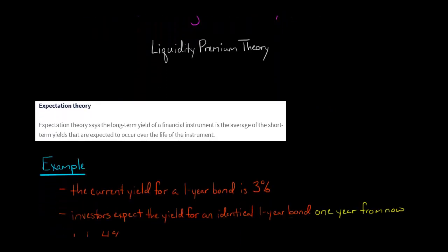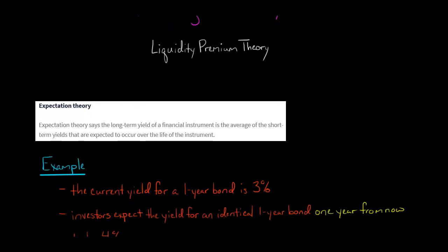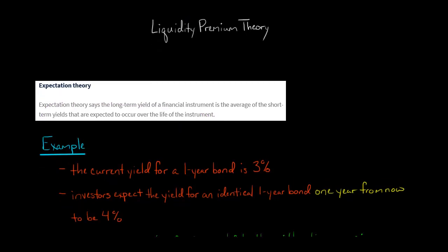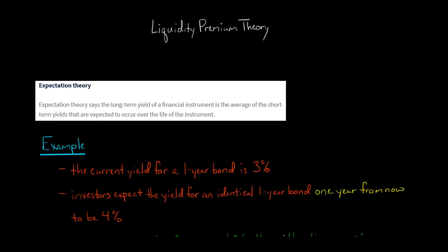Expectation theory says the long-term yield of a financial instrument is the average of the short-term yields that occur over the life of that instrument. Let's do an example. So let's say the current yield on a one-year bond is 3%, and investors expect the yield for an identical one-year bond one year from now to be 4%.